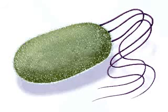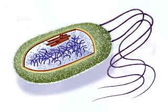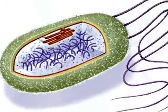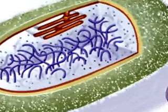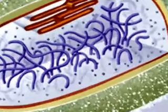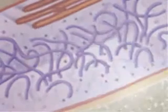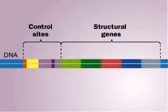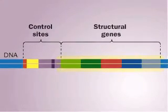The tryptophan operon, or trp operon for short, is a bacterial system for regulating the synthesis of the amino acid tryptophan. The operon controls expression of five genes.